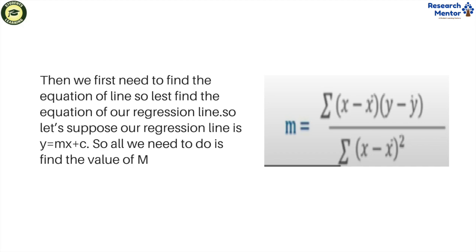So all we need to do is find the value of m. The value of m equals sigma (x minus x̄)(y minus ȳ) divided by sigma (x minus x̄) squared.